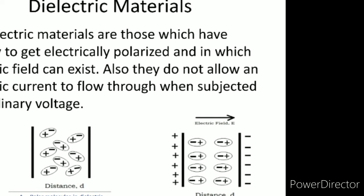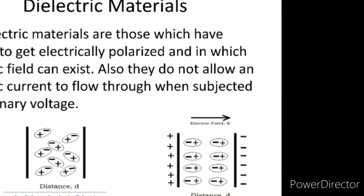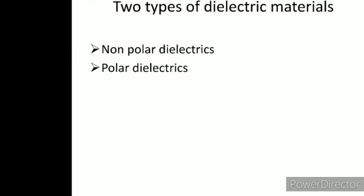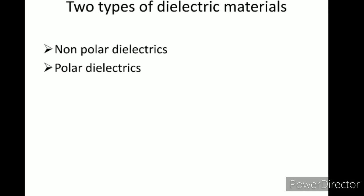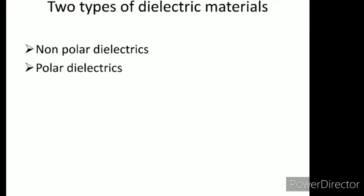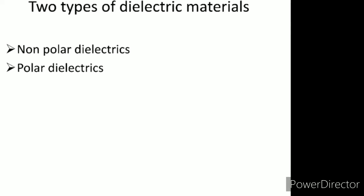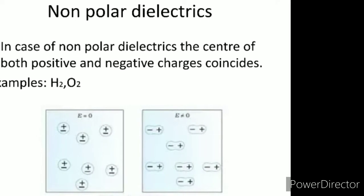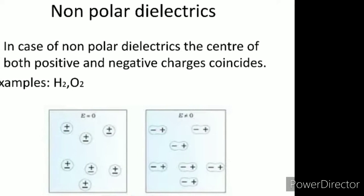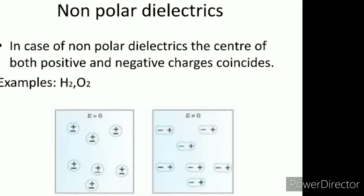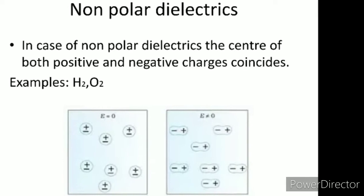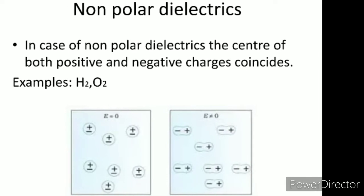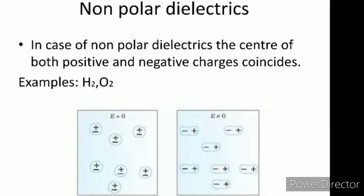There are two types of dielectric materials: the first one is non-polar dielectrics and the second is polar dielectrics. In the case of non-polar dielectrics, the center of both positive and negative charges coincides. For example, H₂O₂.